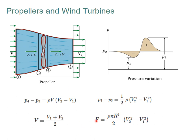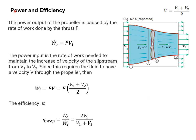And finally, he comes up with the force thrust driven by the propeller. We can also calculate the power and efficiency of the propeller. The power output of the propeller is caused by the rate of work done by the thrust F, so it's F times V1.